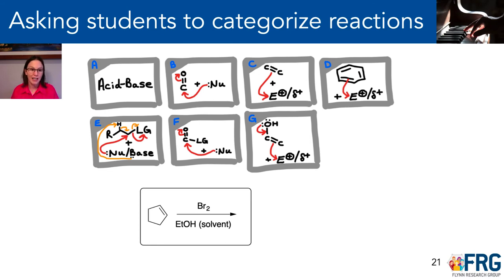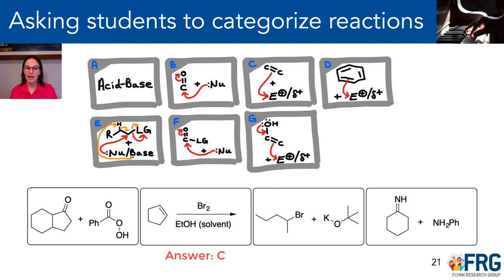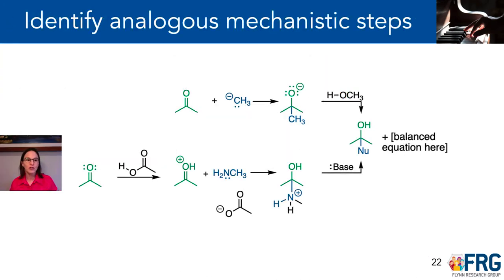One approach is to ask students to categorize reactions. They can be given a reaction and asked to decide which category it fits into. We generally suggest that students only use category A — the acid-base category — if that's the only thing happening in the reaction. This can be expanded to a number of different reactions, and even asking these in a classroom setting brings up great discussions about reactivity and mechanisms. You could also ask students to look at different mechanisms and identify analogous mechanistic steps — even though the atoms look different, the steps may look different, and one may be under basic conditions while the other is under acidic conditions — and explore the parallels and similarities between these different reactions.